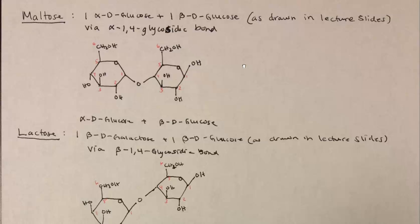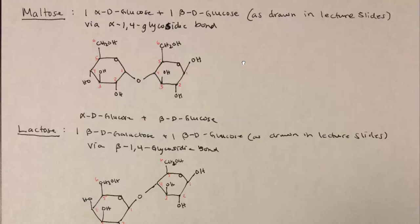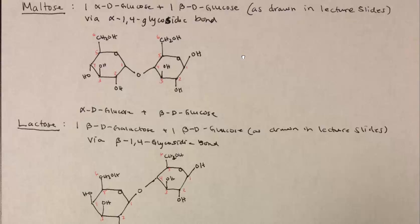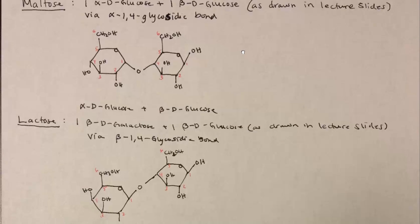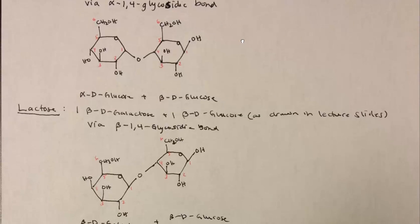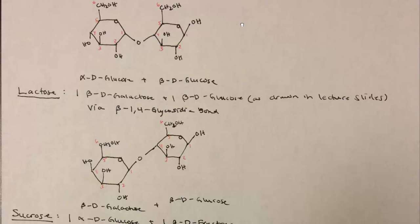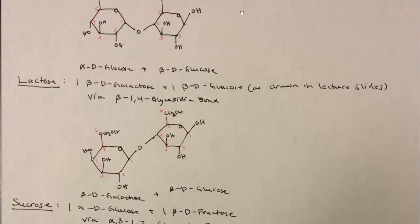Now, if you look up maltose, you'll see that there's an alpha and beta maltose. You can find that on Wikipedia or Google. There's alpha and beta maltose here. I believe I've drawn beta maltose, so there is an alpha maltose in case you're interested in that structure. Feel free to pause the video as needed to draw things out or take notes.